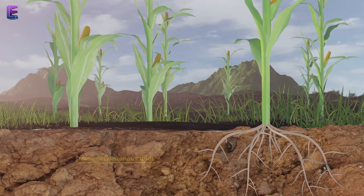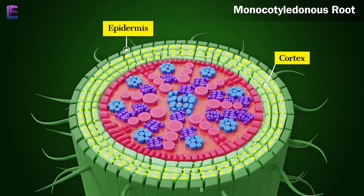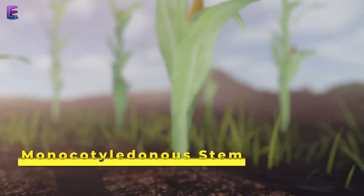Monocotyledonous Root: The internal structure of a monocotyledonous root has three parts. These are: 1. Epidermis, 2. Cortex, and 3. Stele.